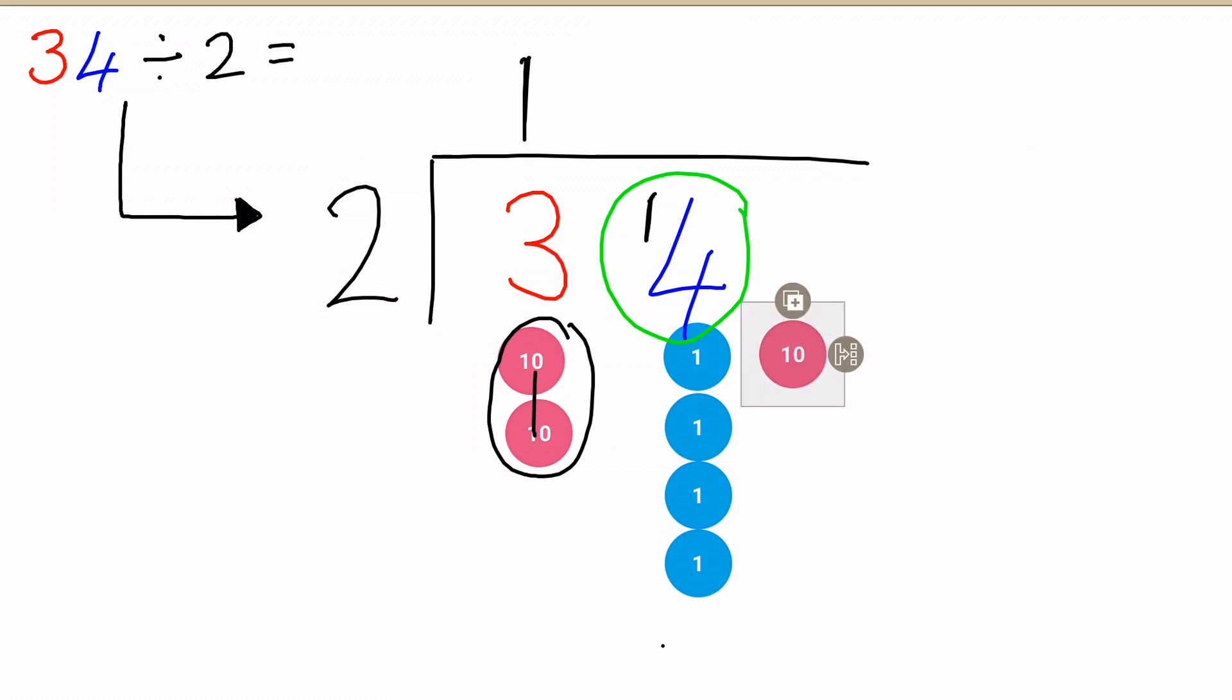but when we regroup something, we have to remember to turn it into the correct type for the place value column that it's in. So we turn the 10 into 10 ones.